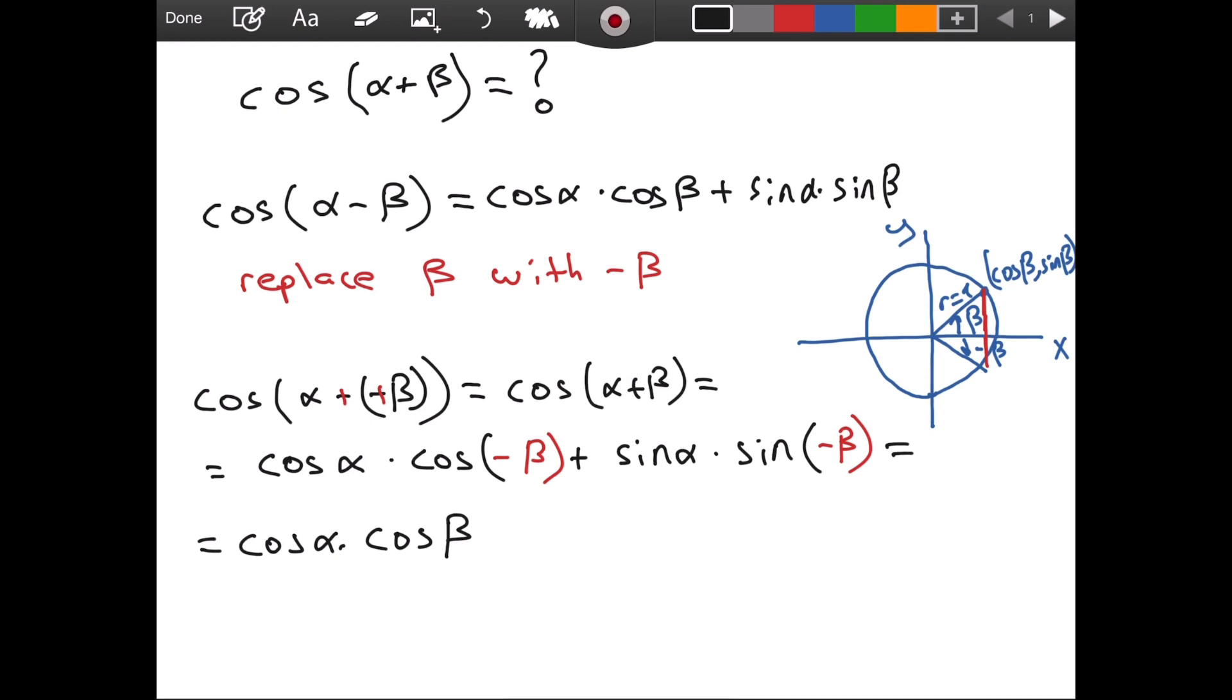But what about, let me write this part as well, what about sine of negative beta? Well, the sine of beta is going to be projected here. So, it is a positive value. But when we look at the sine of negative beta, it is going to be a negative value.